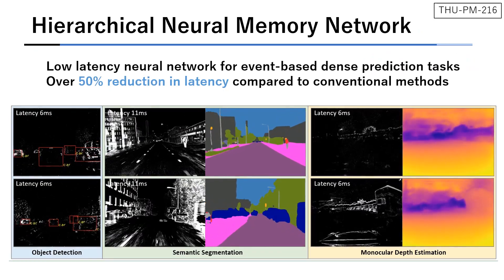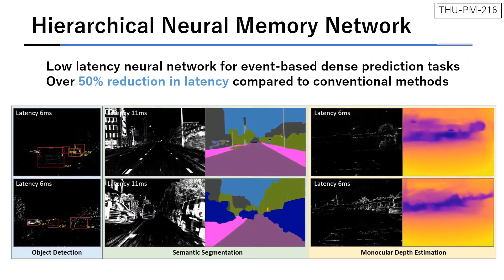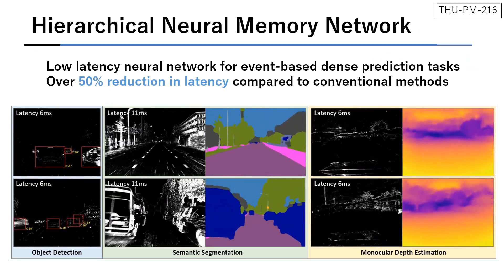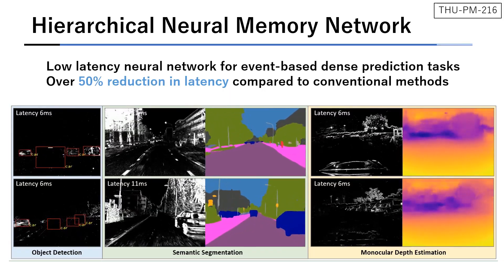In this work, we proposed a low latency neural network for event cameras where we achieved over 50% reduction in latency compared to conventional methods.